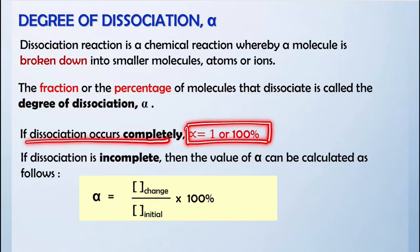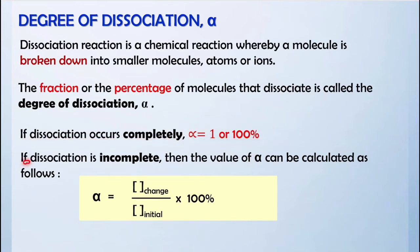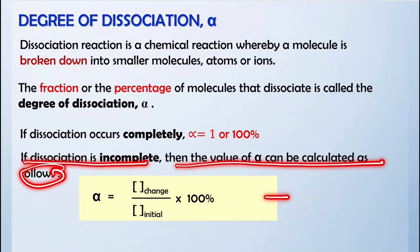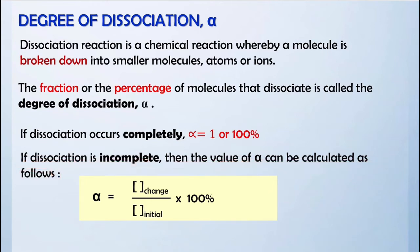If dissociation occurs completely, the value of α equals 1 or 100%. If dissociation is incomplete, we can calculate α using the following formula: α = (concentration change / initial concentration) × 100%.